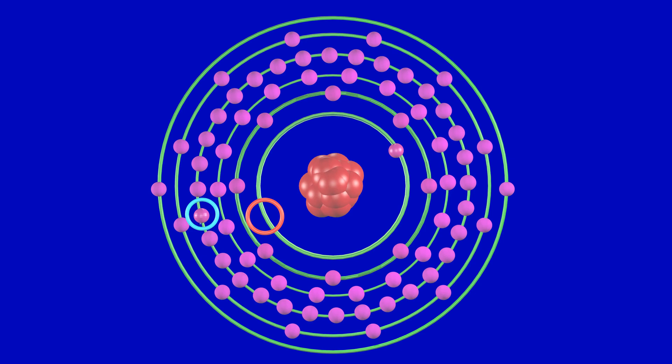In order to jump from an outer shell to the vacant inner shell, electron must radiate energy and energy is radiated in the form of electromagnetic radiation.